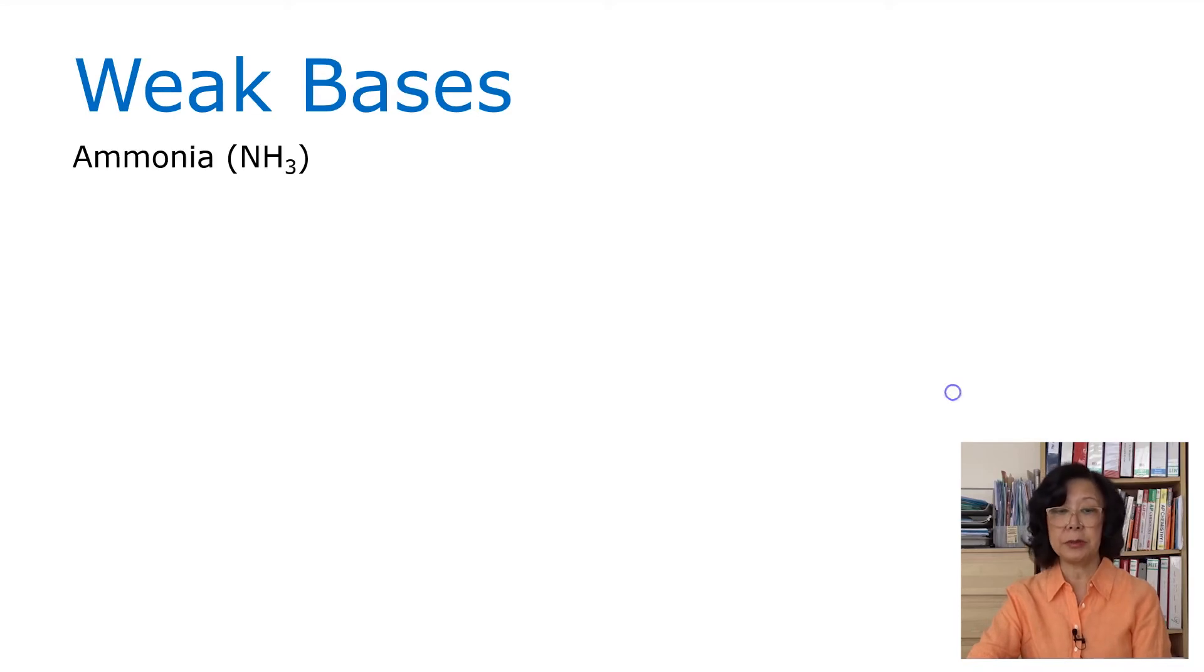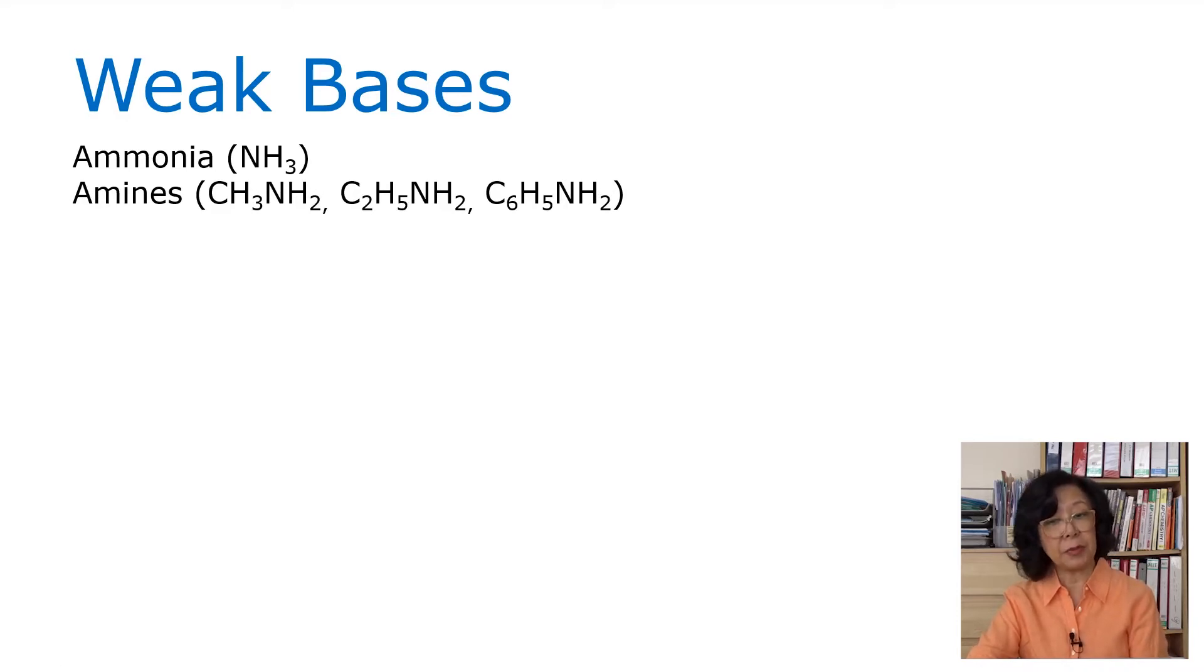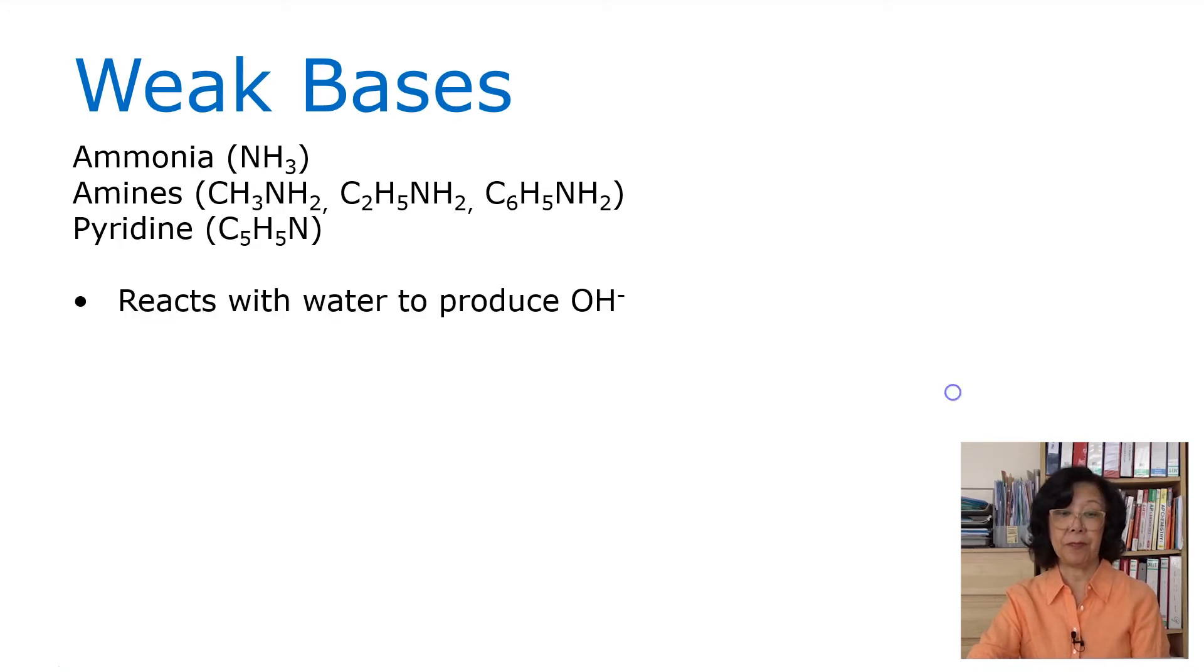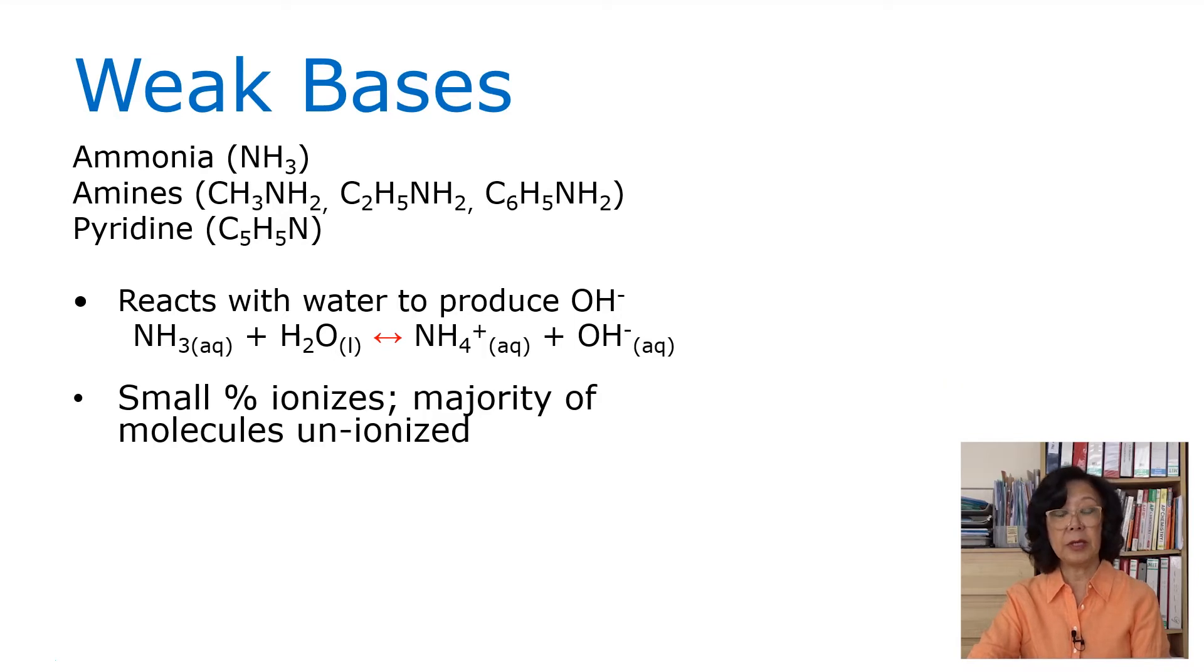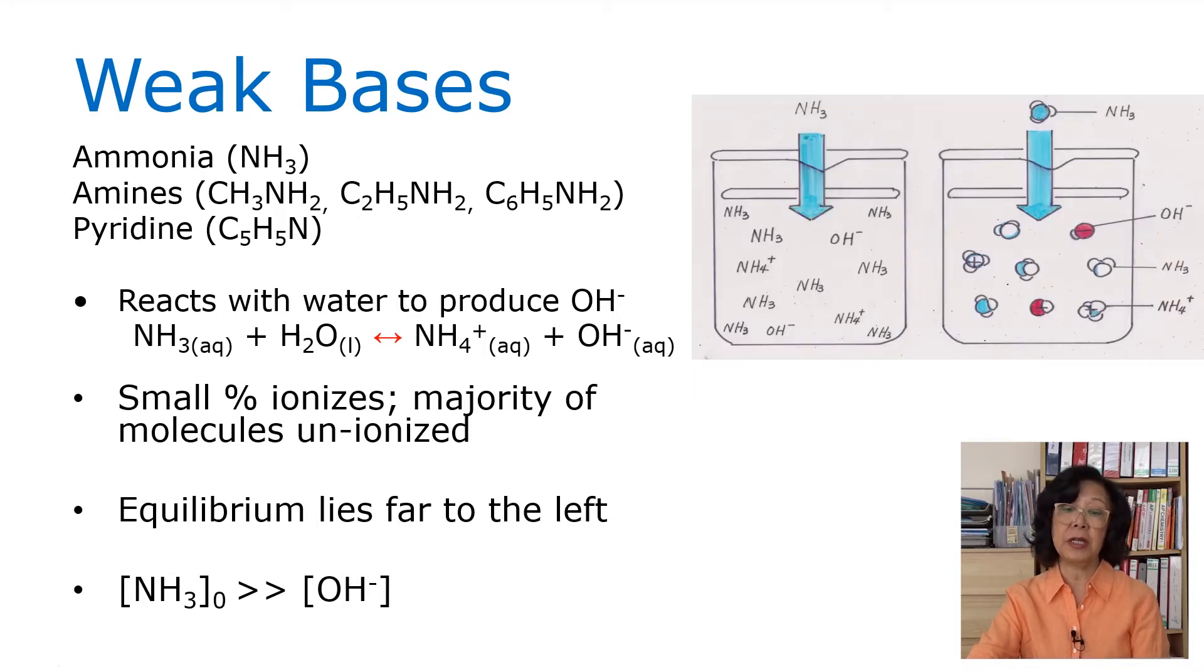With regard to weak bases, we have ammonia, NH3, or we have amines like methyl amine and ethyl amine with the NH2 group, and we have pyridine. These are typically weak bases. They react with water to form hydroxide ion. Therefore, when we write the equation, we must put the water in there. Ammonia in water forms ammonium and hydroxide ions, and we use the forward and reverse arrow, represented by the red arrow. This is at equilibrium. Only small percentages would ionize. Majority of the molecules remain unionized. Equilibrium lies far to the left. The initial concentration of ammonia is much greater than the hydroxide ion concentration, as represented by the picture here. A lot of ammonia molecules still remain unionized.